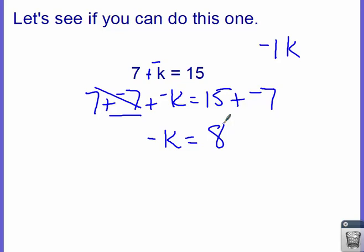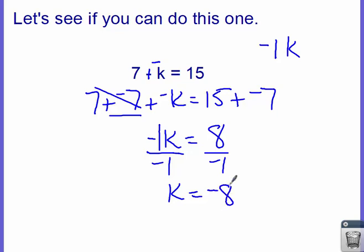There are two ways of finishing this problem, because I don't want to know what negative k is — I want to know what positive k is. One way is to remember there is a 1 in front of the k and divide both sides by negative 1, ending up with k equals negative 8. The other way: we started with negative k equals 8, but ended with k equals negative 8. All we do is change the negative k to a positive, and change the 8 to its opposite. We end up with k equaling negative 8. So when you have a negative letter, just change the letter to positive and change the number to its opposite.